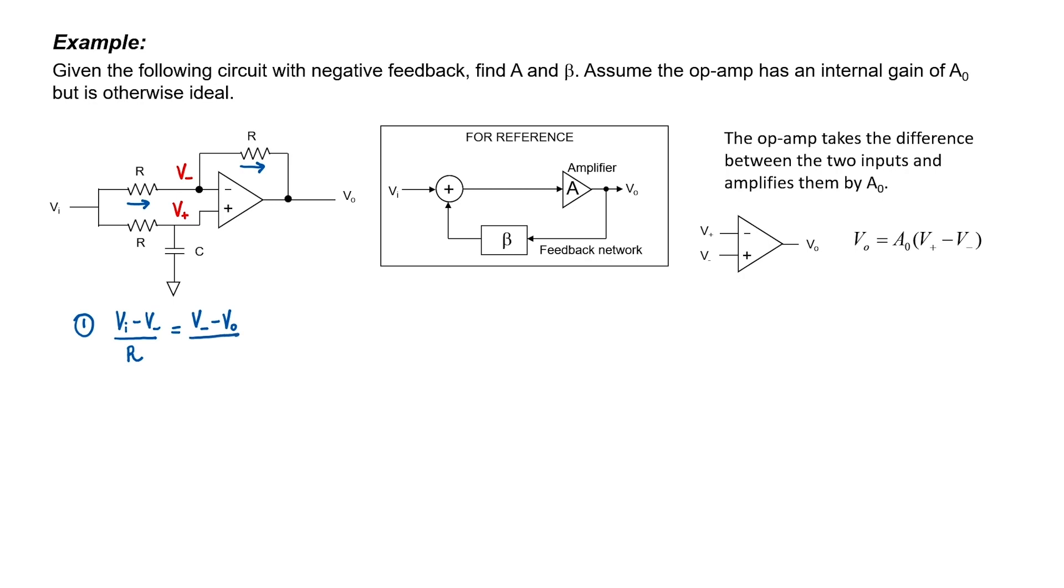We can use Ohm's law to find the current through each resistor. The current through the left resistor equals the current through the right resistor. I have a second equation already written down that relates the output voltage to the difference at the two input terminals. Because the current going into the non-inverting terminal is going to be zero, we can use voltage division to find V plus in terms of VI.